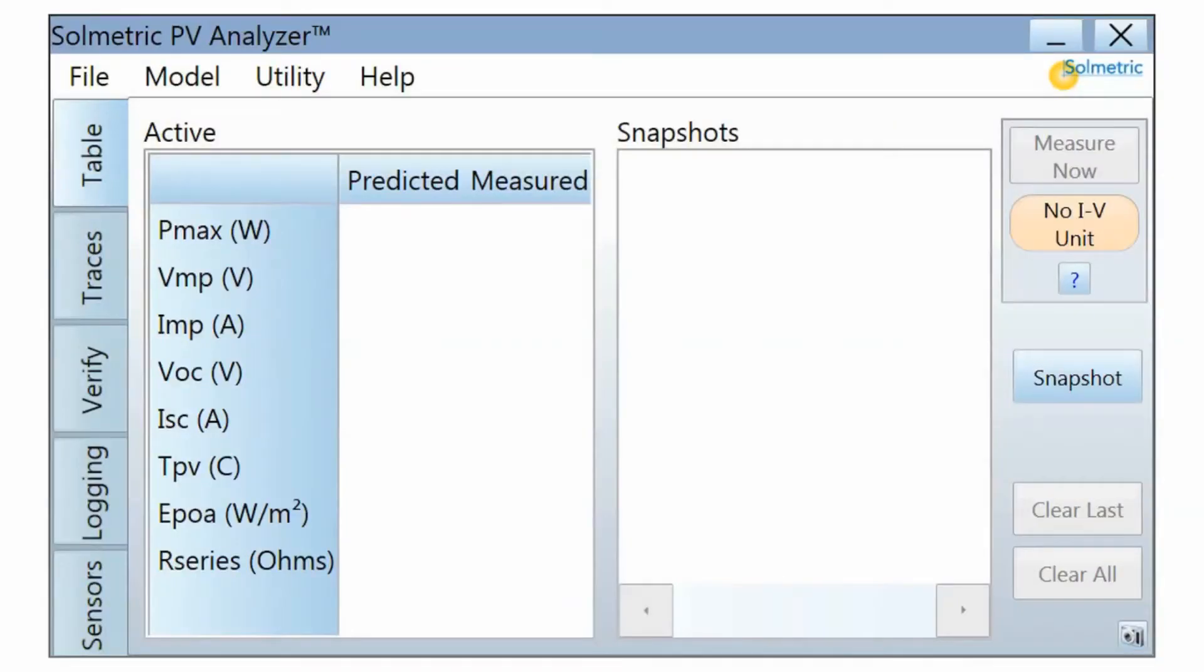When the wireless connection has been made, notice that the status indicator in the software has changed from No IV Unit to Ready and is now colored green. This means the PV Analyzer is ready to take a measurement.